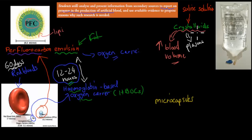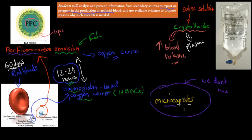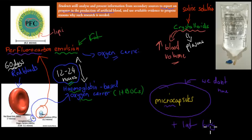What we don't have yet is a really good oxygen carrier that lasts a lot longer. Microcapsules might be that solution — they may be able to carry much more oxygen than perfluorocarbon emulsions and HBOCs, and they can also last longer. But it's still early days; we don't actually have this yet. We are still at least 10 years off from having microcapsules properly developed.